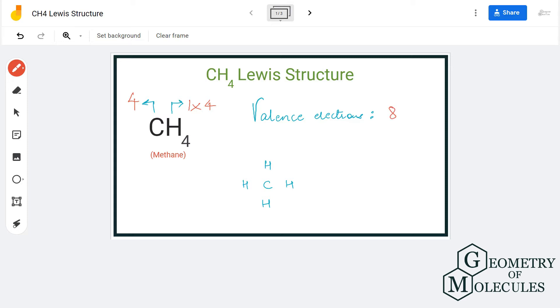Now carbon atom will take the central position because hydrogen atoms do not take the central position in Lewis structures. So carbon will be in the center and all the hydrogen atoms will be arranged around it like this.